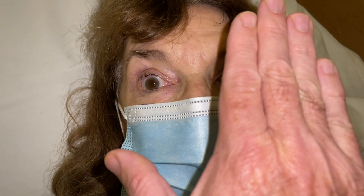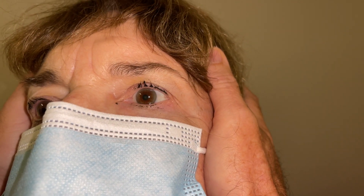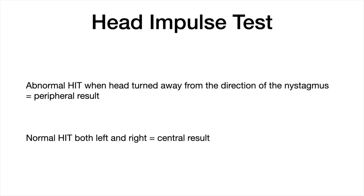Next is the test of skew. There's no vertical or diagonal movement seen, so another HINTS-Plus peripheral result. If you saw vertical or diagonal movement, that would be a HINTS-Plus central result. On to the most important way to confirm a diagnosis of vestibular neuritis — the head impulse test. When her head is turned rapidly to the left, there's no catch-up saccade seen. When her head is turned rapidly to the right, you do see a catch-up saccade, in the same direction as the nystagmus — to the left — but clearly of greater magnitude than the resting nystagmus. That's the important HINTS-Plus peripheral result needed to make the diagnosis. If you saw a normal head impulse test on both sides, that would be a HINTS-Plus central result.